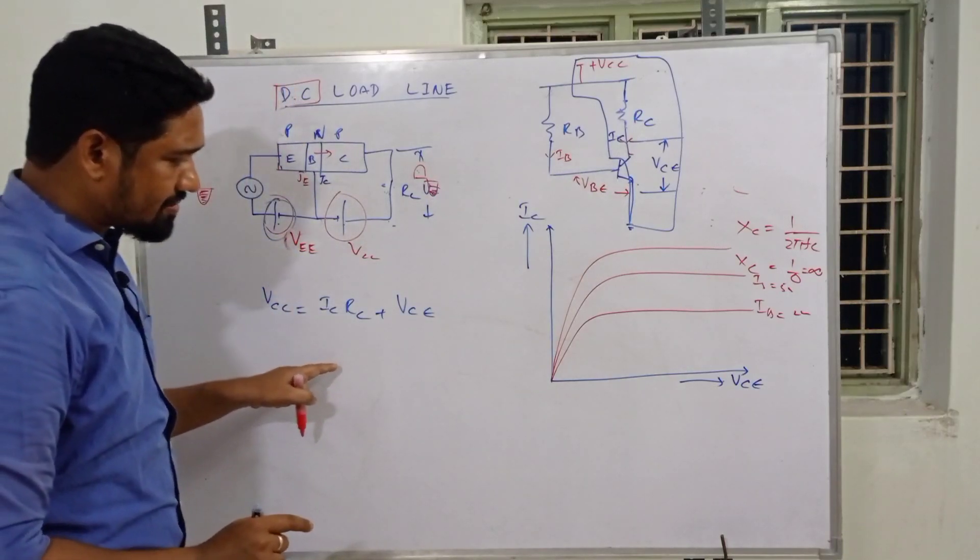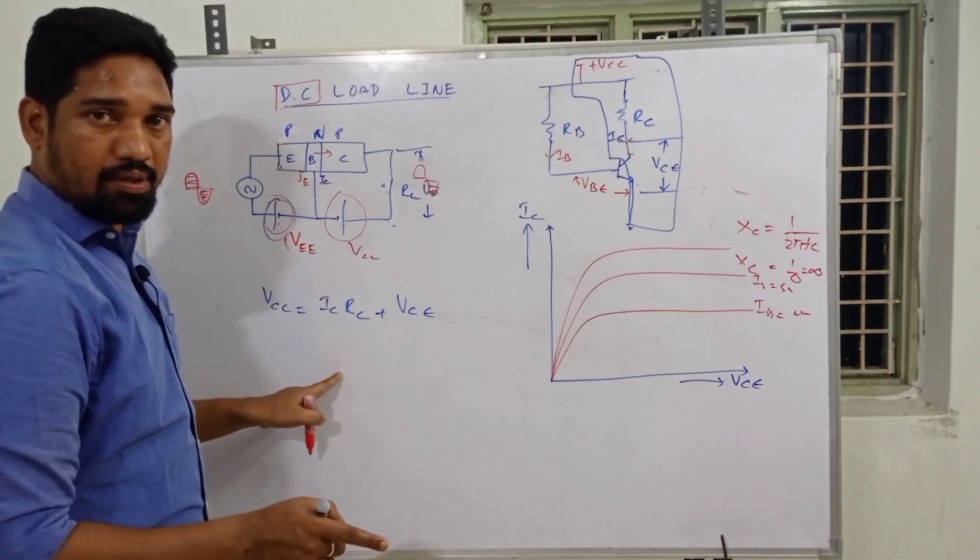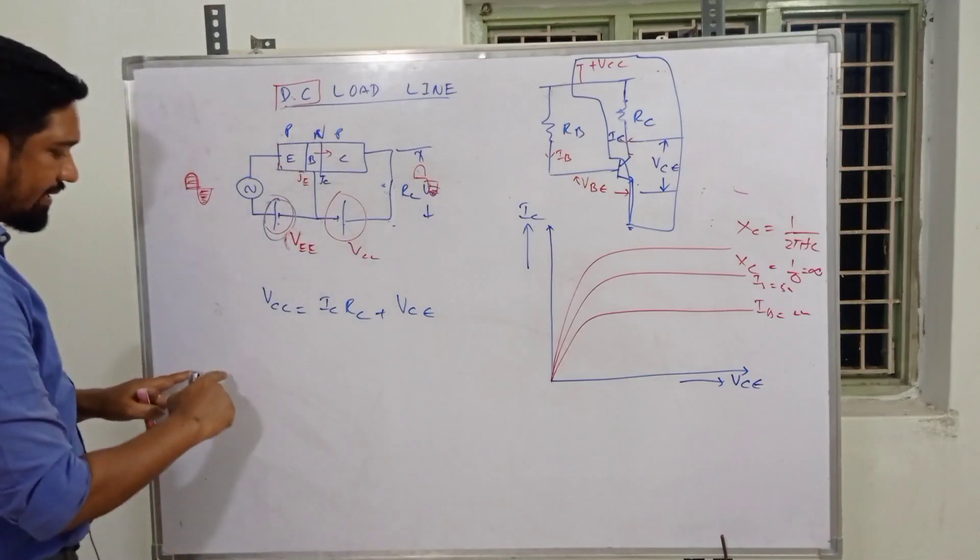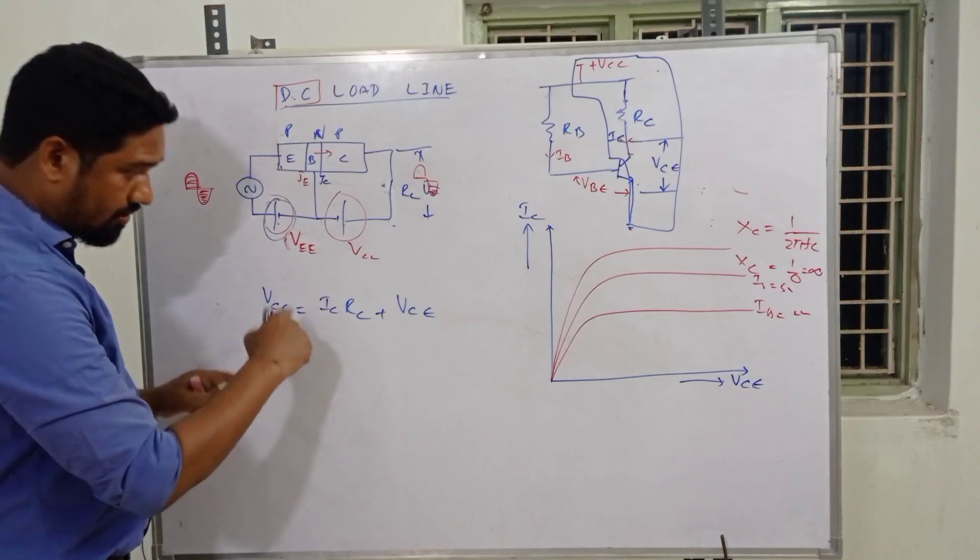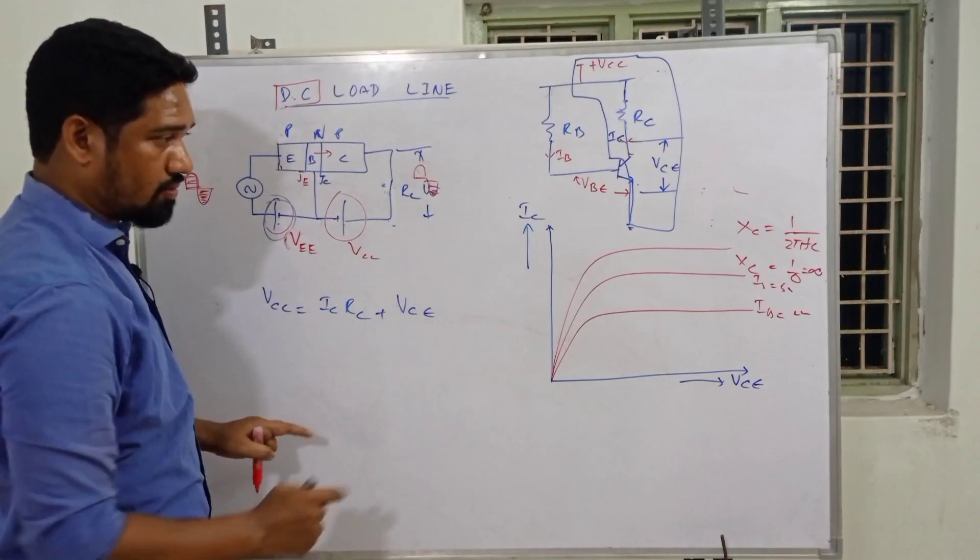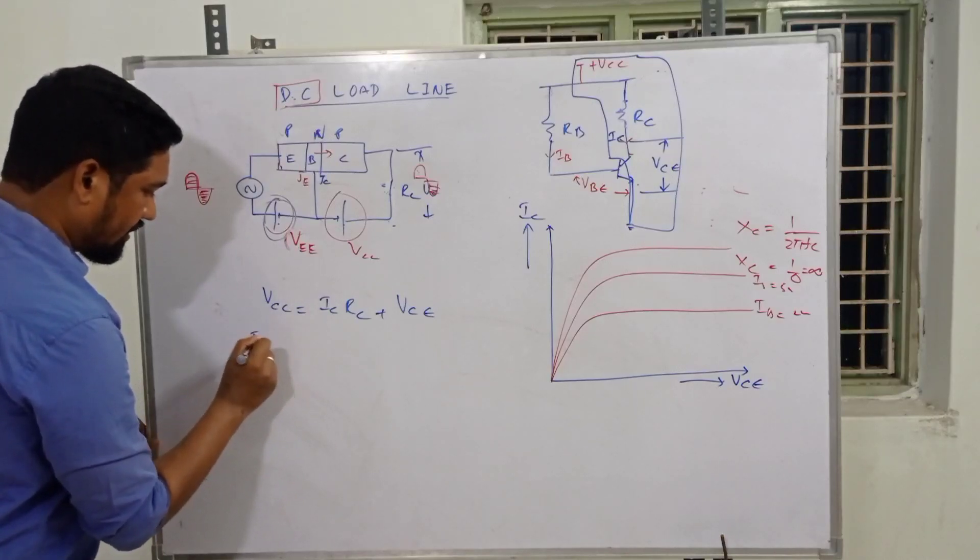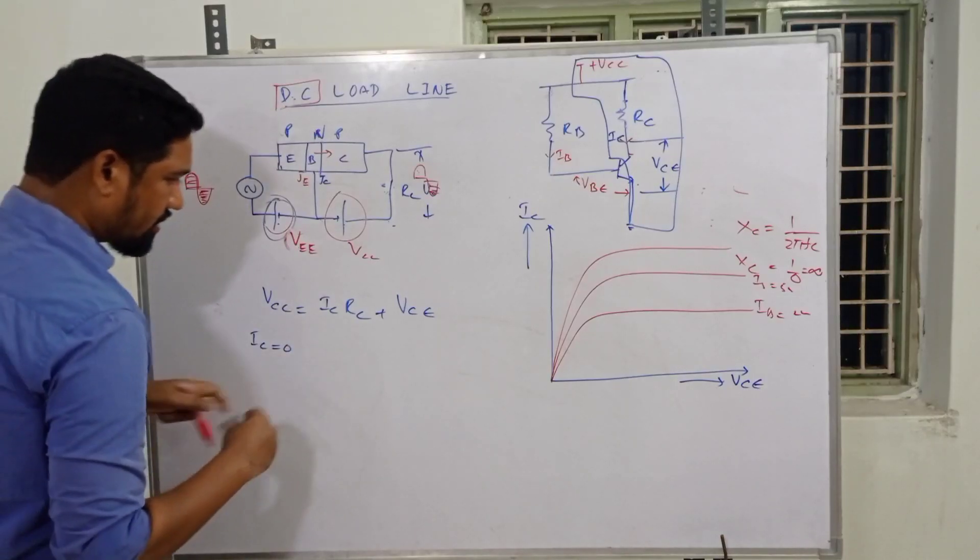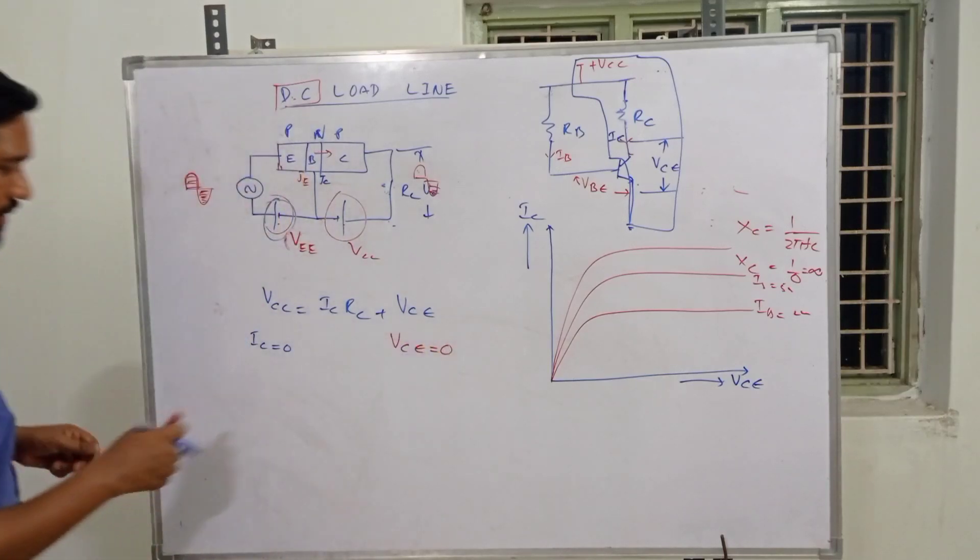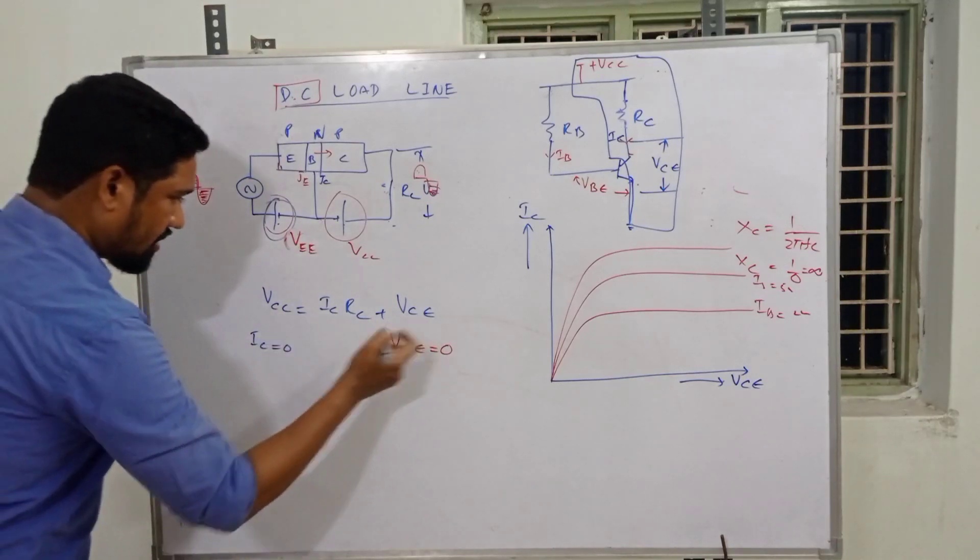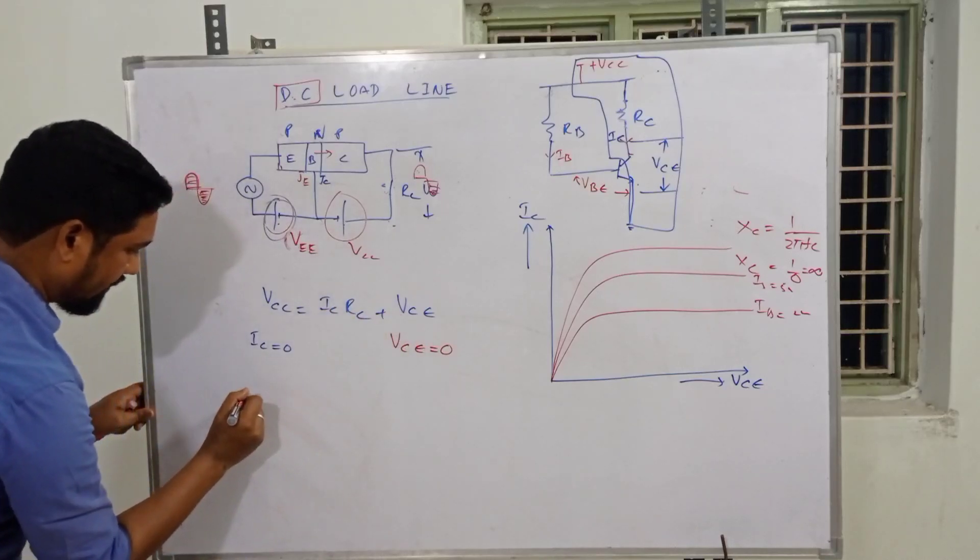We have two conditions here. First condition: when IC is equal to zero. When IC equals zero is plugged into the equation, what happens? We have VCE equals VCC. So VCE equals VCC.